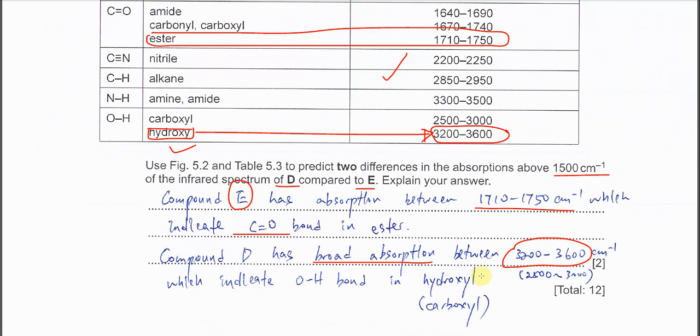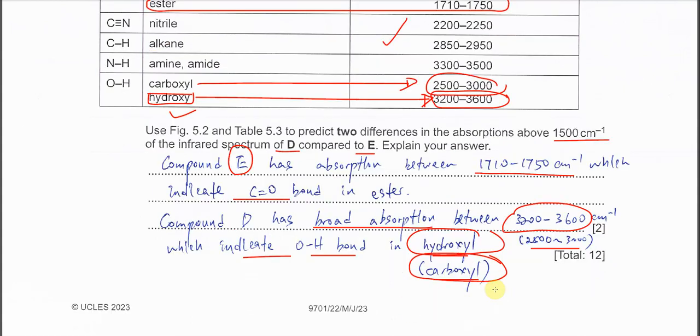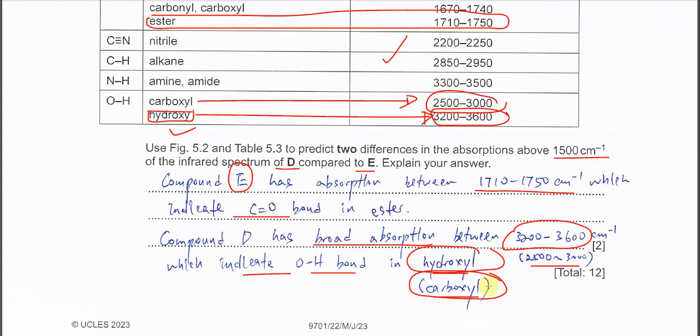Or you can actually slightly change it. Okay, it has a broad absorption between 2500 to 3000, which is this one. Okay, and this one is from the carboxyl. COOH. The OH in carboxyl. So which indicates OH bond in hydroxy or carboxyl. If you put 3200 to 3600, so you just name hydroxy. If you put 2500 to 3000, then you just name carboxyl. Okay, that's all for this question. Thank you.